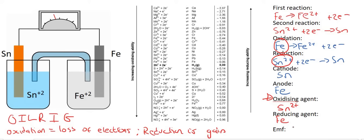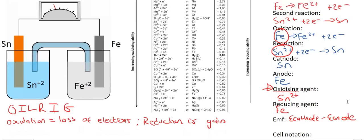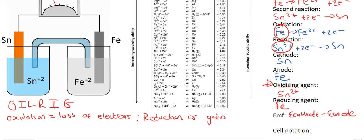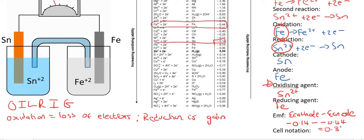To calculate EMF, we said in the last video that you should always take the voltage value of your cathode and minus the voltage value of your anode. The cathode is Sn, so we go to the table and for Sn we can read off the voltage value as negative 0.14. Then we say minus, and the anode was Fe, so that's going to be negative 0.44 — so there's going to be a double negative there. If you work this out, you're actually going to end up with a positive 0.3 volts.